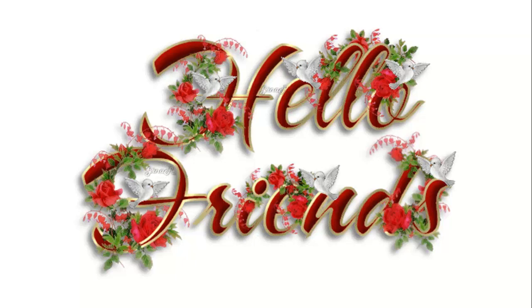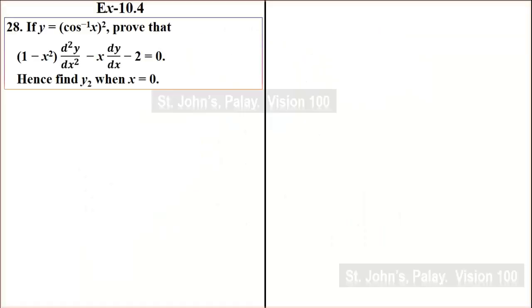Hello friends, exercise number 10.4, question number 28. If y is equal to cos inverse x the whole square, prove that 1 minus x square into d square y by dx square minus x dy by dx minus 2 equal to 0. Hence find y2 at x equal to 0.